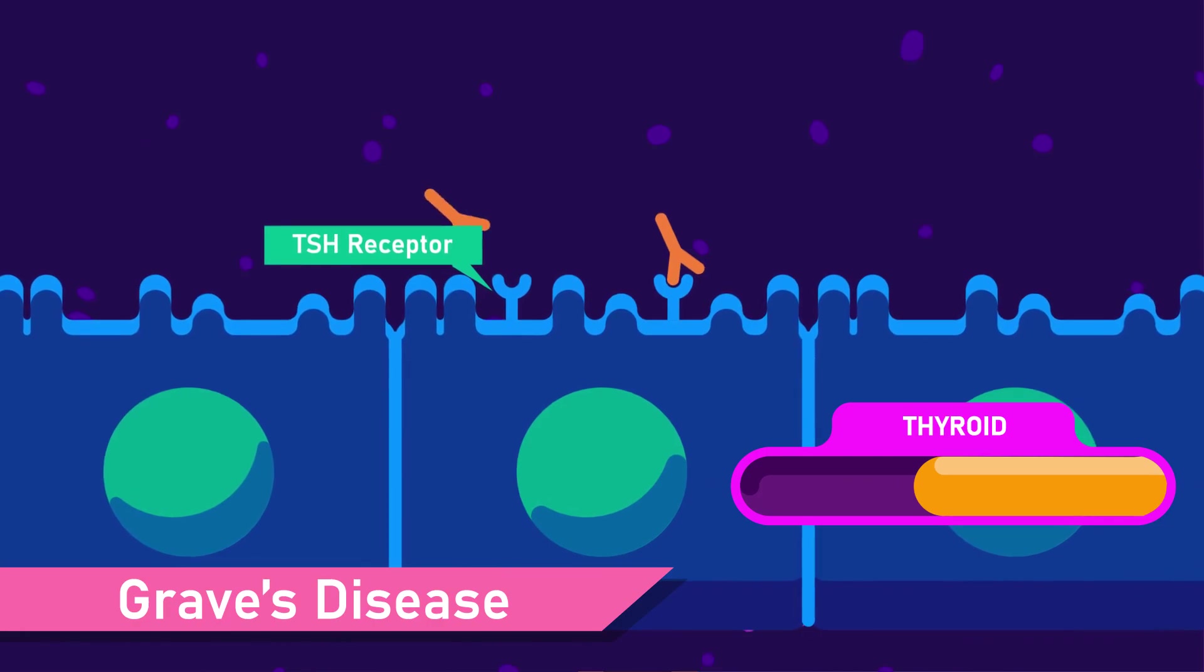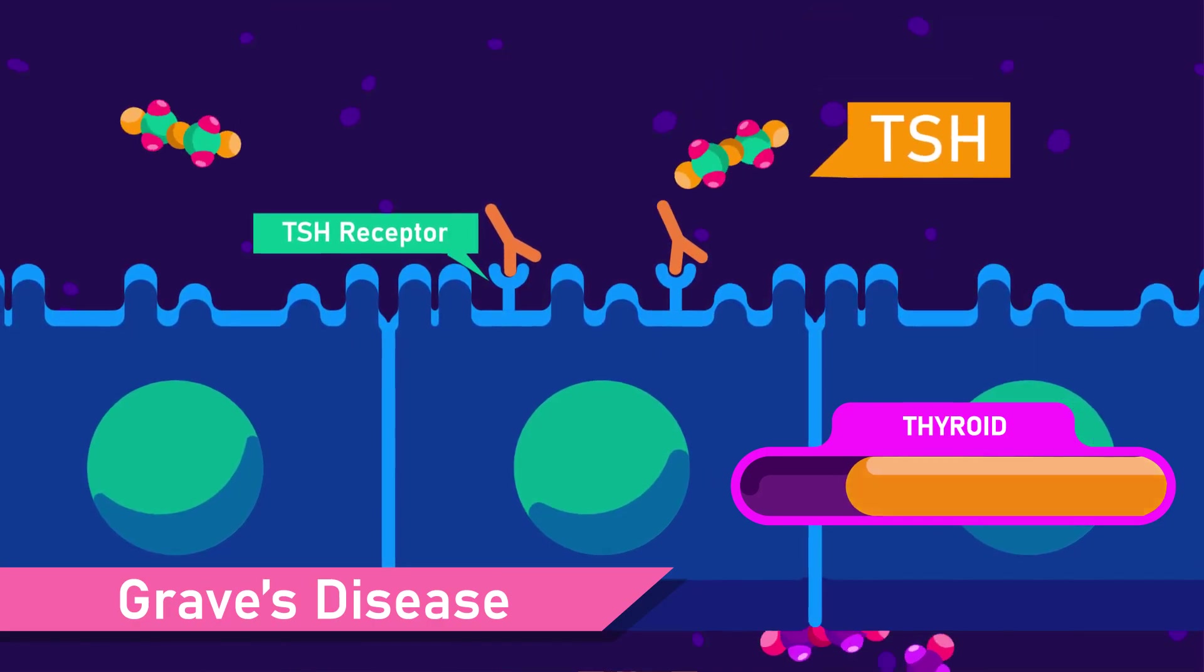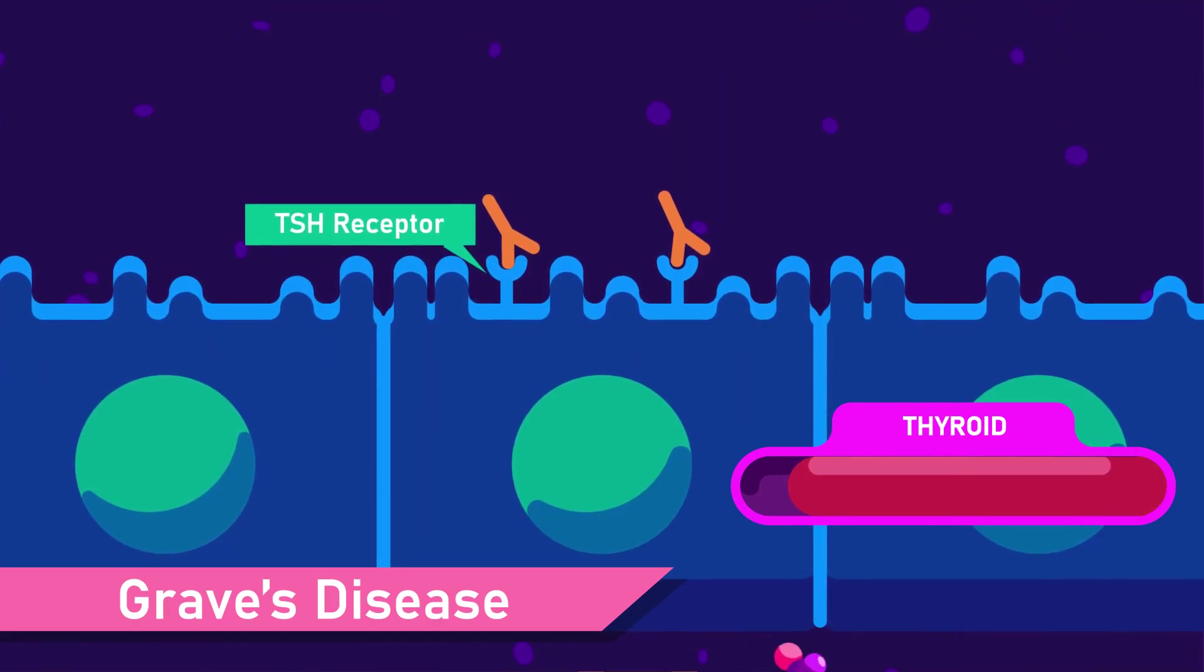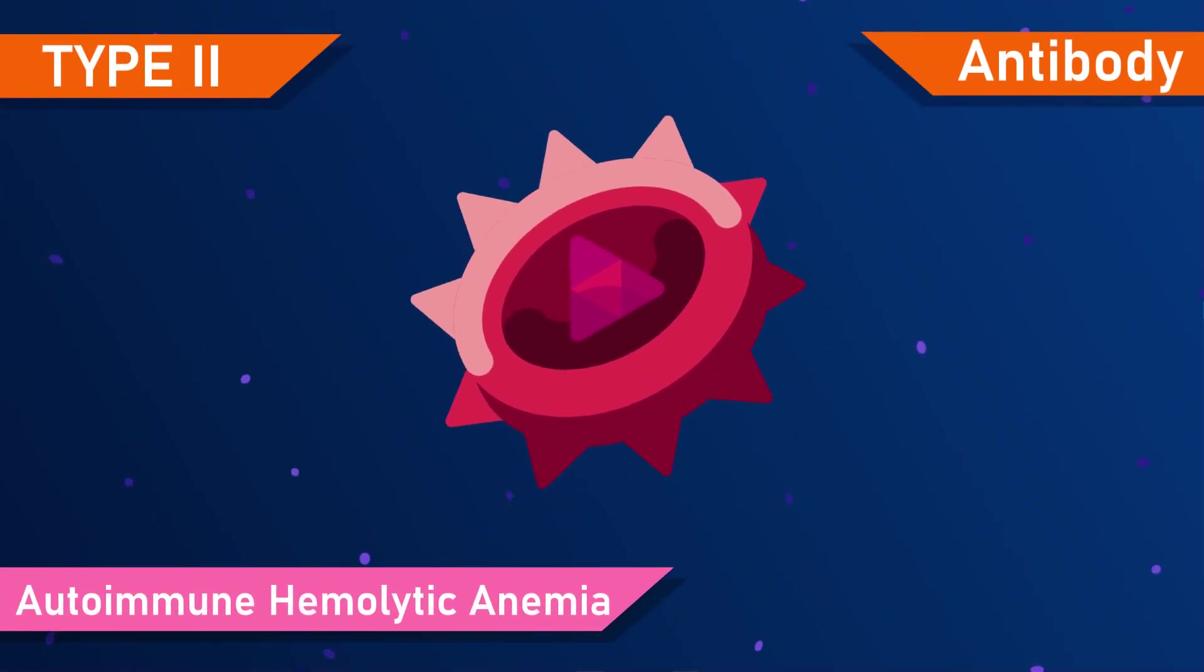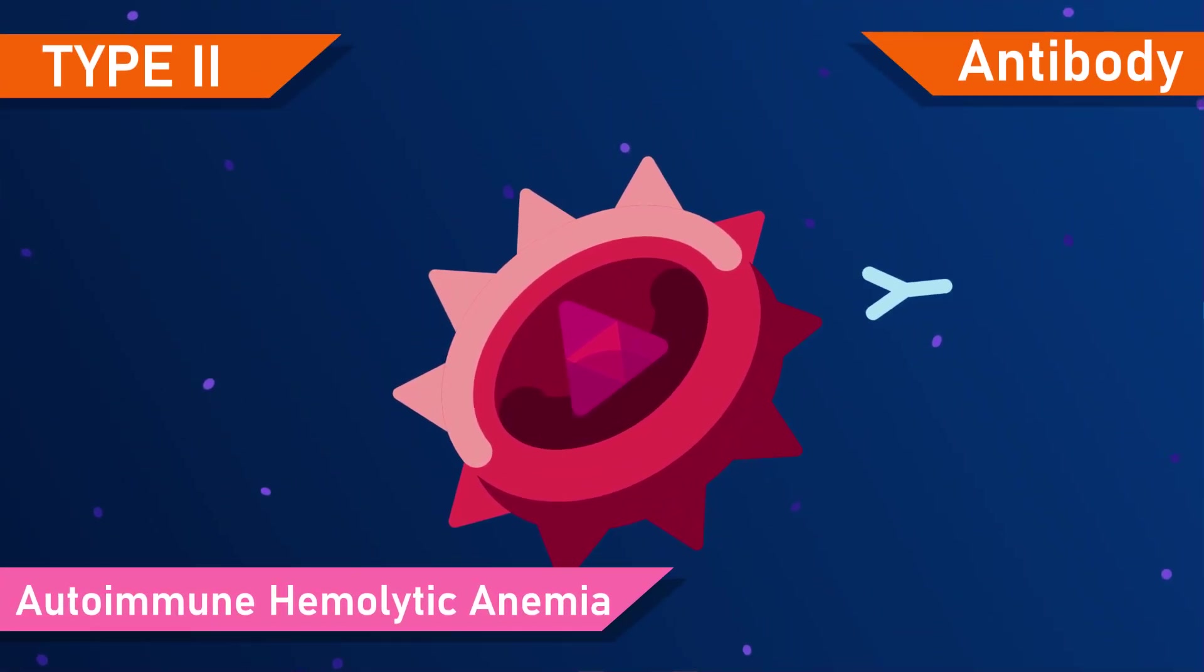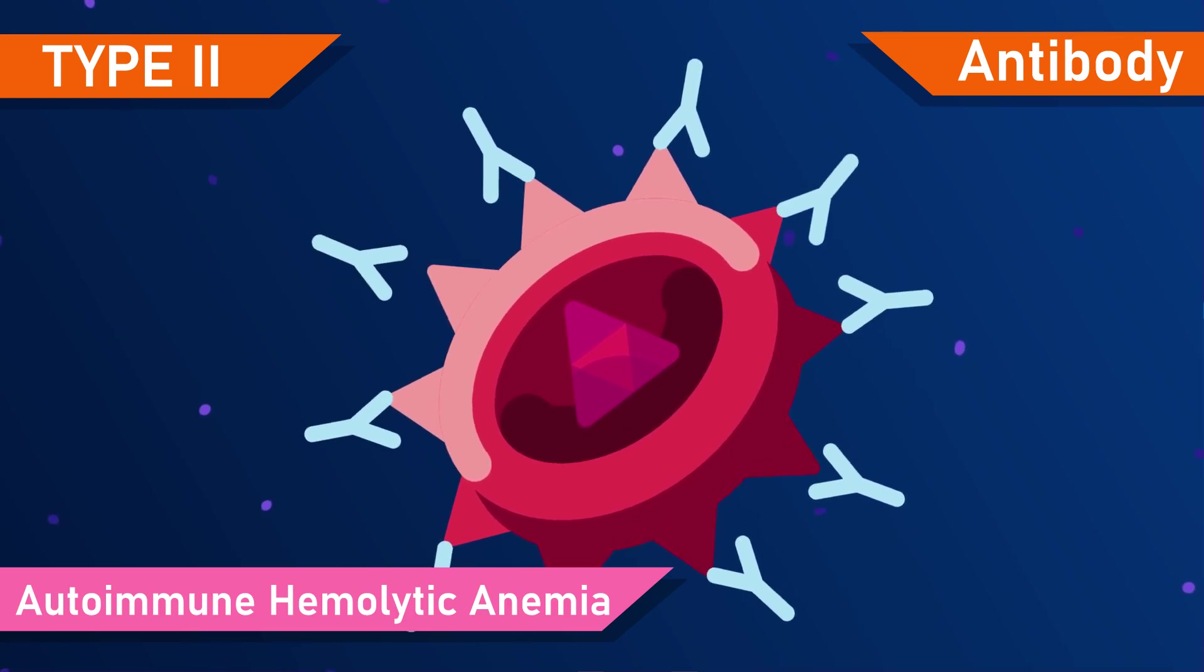3. Graves disease, when the antibody reacts with TSH receptors. 4. Autoimmune hemolytic anemia, when the antibody reacts with the membrane proteins in the red blood cells.